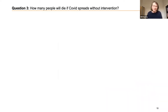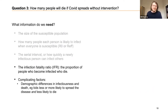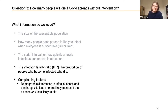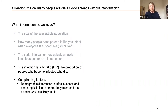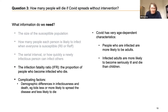How many people will die if COVID spreads without intervention? We need the same information — population size, reproduction number, and serial interval — plus the infection fatality ratio: the proportion of infected people who end up dying. Complicating factors include demographic differences. Kids are not only less likely to get and spread the disease, but also really less likely to die. COVID is very age-dependent — it infects and harms older people much more than younger people. It's important to build that into your model.